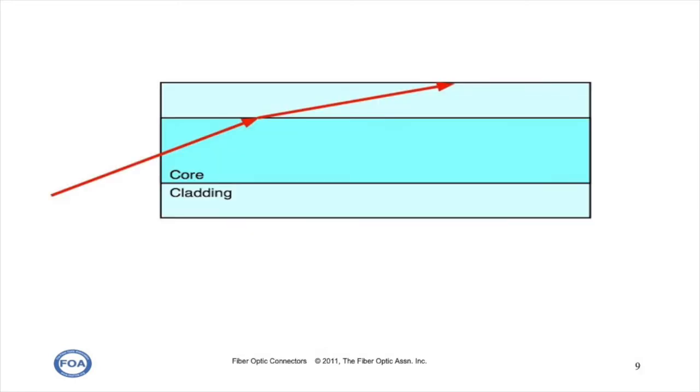When a light ray enters at too high an angle, the ray will go off into the cladding, but the angle will be reduced.